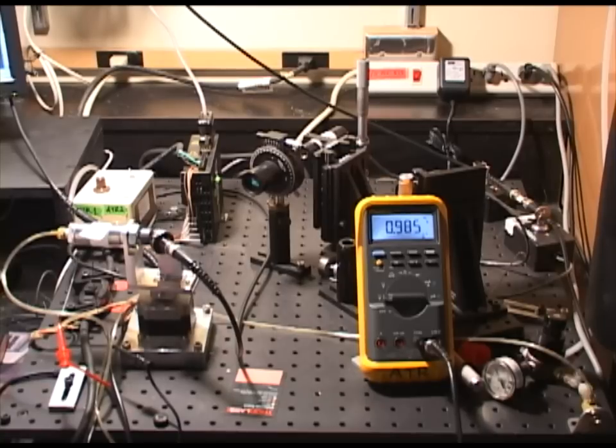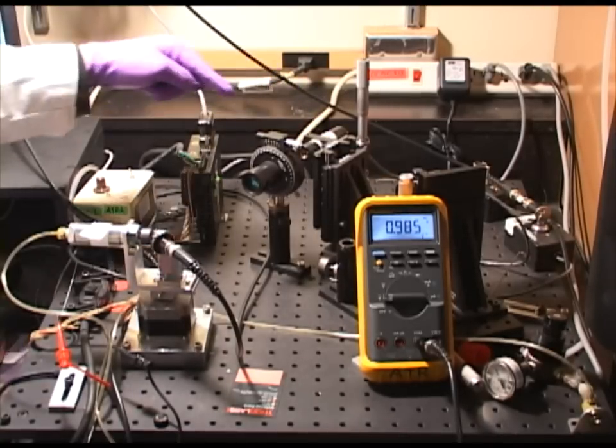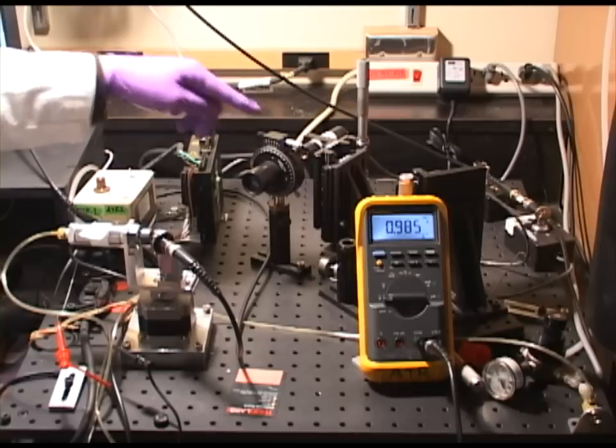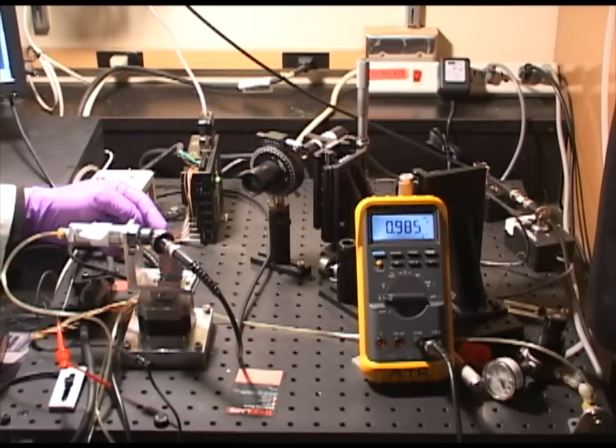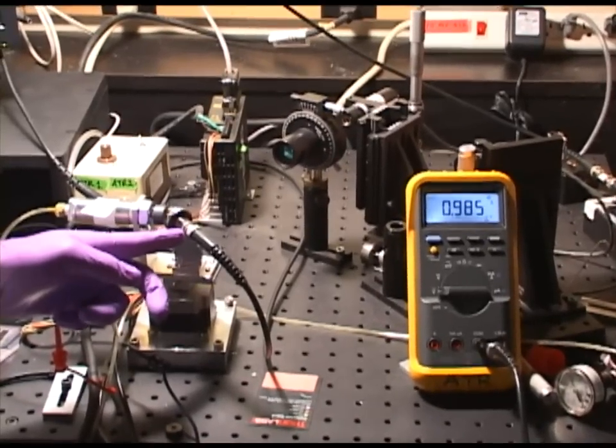First, I'll go over the device setup. It begins with the 1310 nanometer laser, passes through a polarizer, into a prism, is incident on the sample, and then passes into the detector.